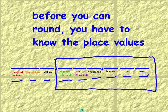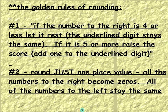Let's go over the rules of rounding. Rule number one: if the number to the right is four or less, let it rest — that means the underlined digit stays the same. If it is five or more, raise the score — that means add one to the underlined digit. Rule number two: round just one place value. All the numbers to the right become zeros; however, all the numbers to the left stay the same.